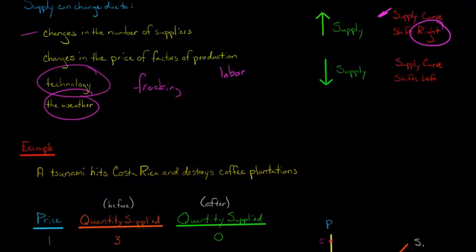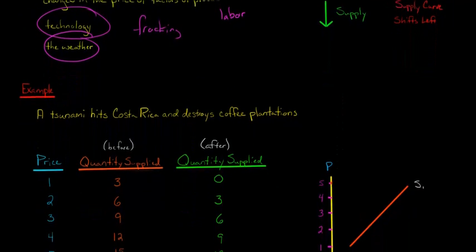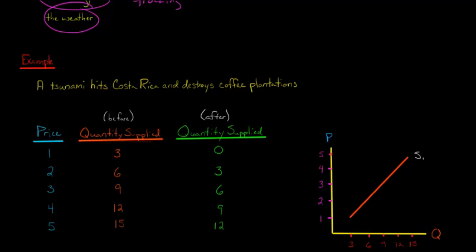Let's say that a tsunami hits the country of Costa Rica and destroys a number of coffee plantations. I hope that doesn't happen, but let's say that it did. We could look at the quantity of coffee supplied before. This is our supply schedule before the tsunami hits.